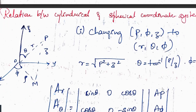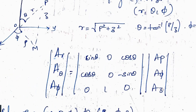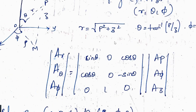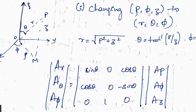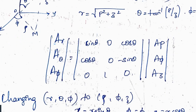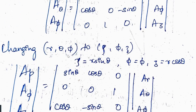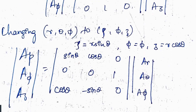The last relationship is between cylindrical and spherical coordinate systems. To convert cylindrical to spherical: r = √(ρ²+z²), θ = tan⁻¹(ρ/z), φ = φ (same). For the reverse — spherical to cylindrical — find ρ = r·sinθ, φ = φ, z = r·cosθ, then substitute into the appropriate matrix form.